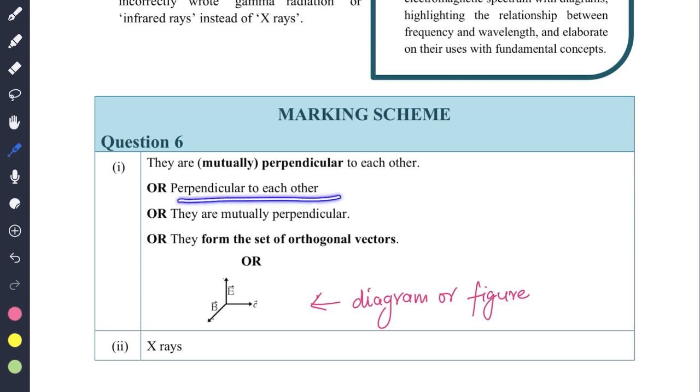You have to write they are mutually perpendicular to each other or perpendicular to each other. They form a set of orthogonal vectors. Even if you don't know the statement or you're not able to recall what you have studied, you can draw the diagram. Full marks will be awarded for that. Many of you don't know about this - you can draw the diagram if you are not able to recall the theory part.